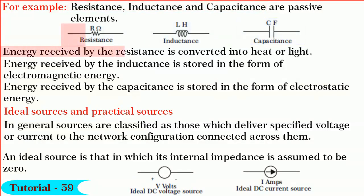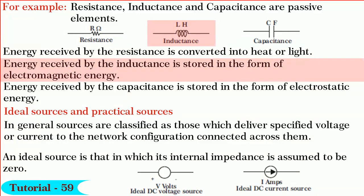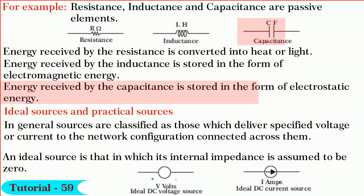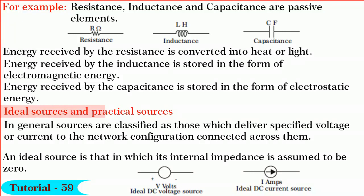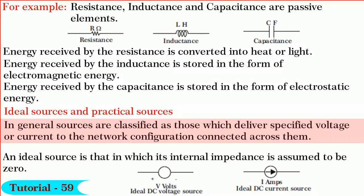Energy received by resistance is converted into heat or light. Energy received by inductance is stored in the form of electromagnetic energy. Whereas energy received by capacitance is stored in it in the form of electrostatic energy. Now let us distinguish between sources. In general, sources are classified as those which deliver specified voltage or current to the network connected across them.